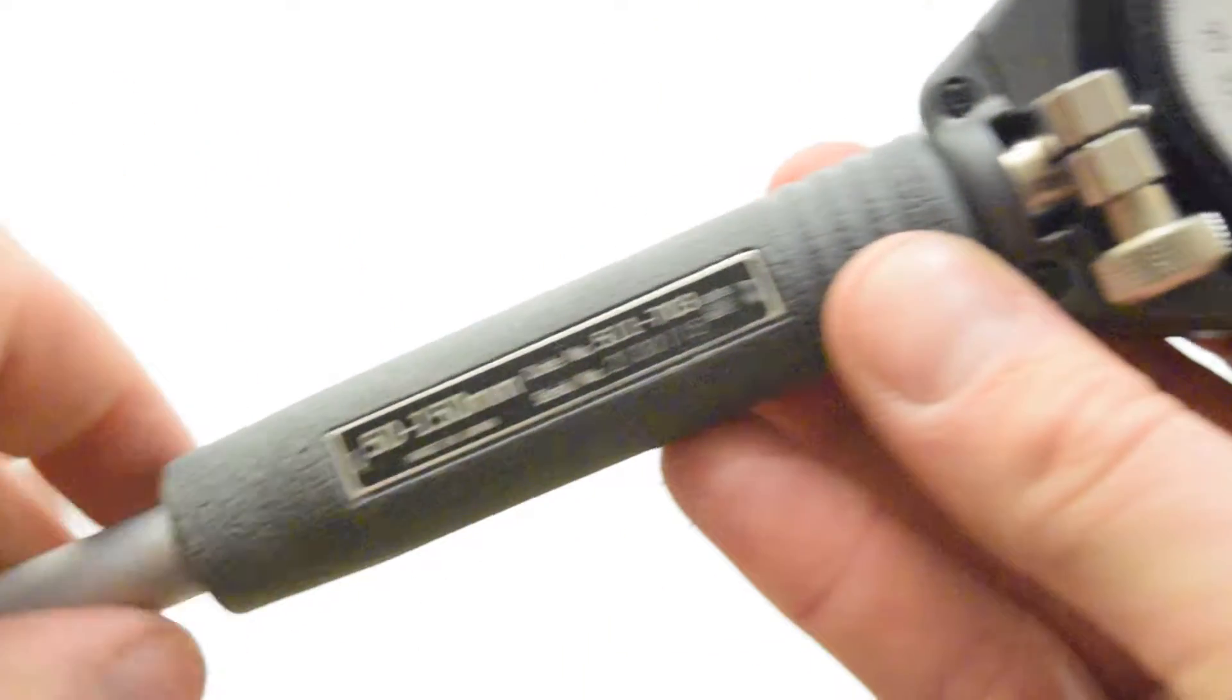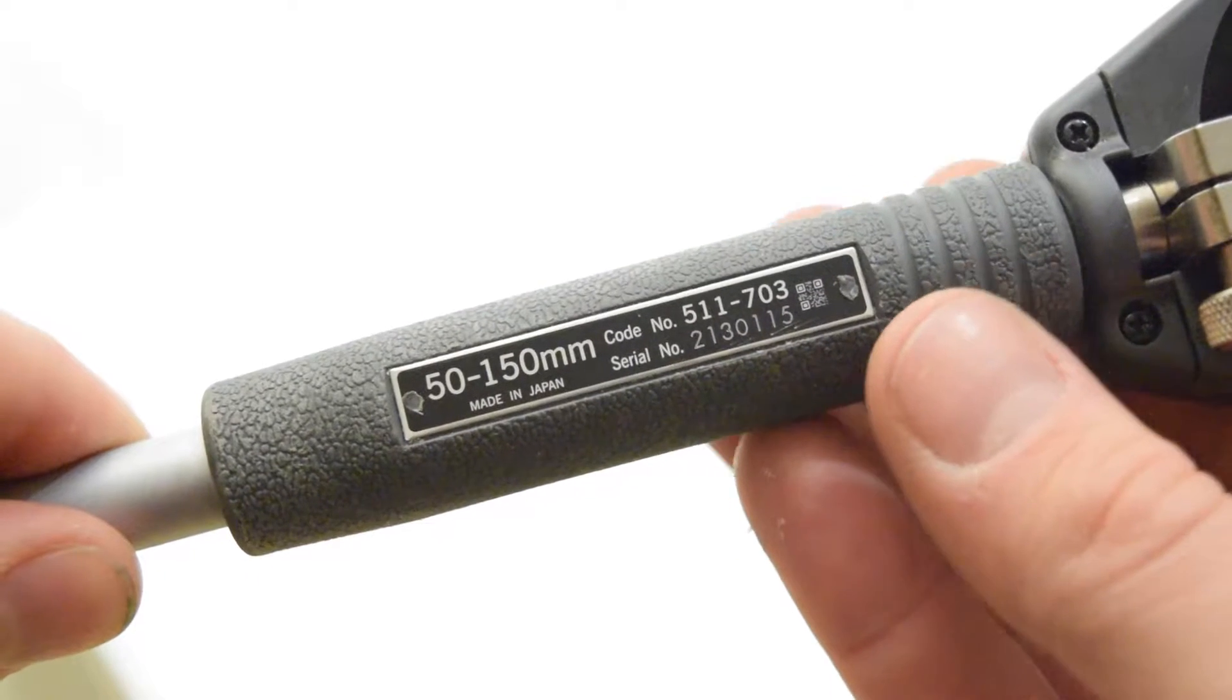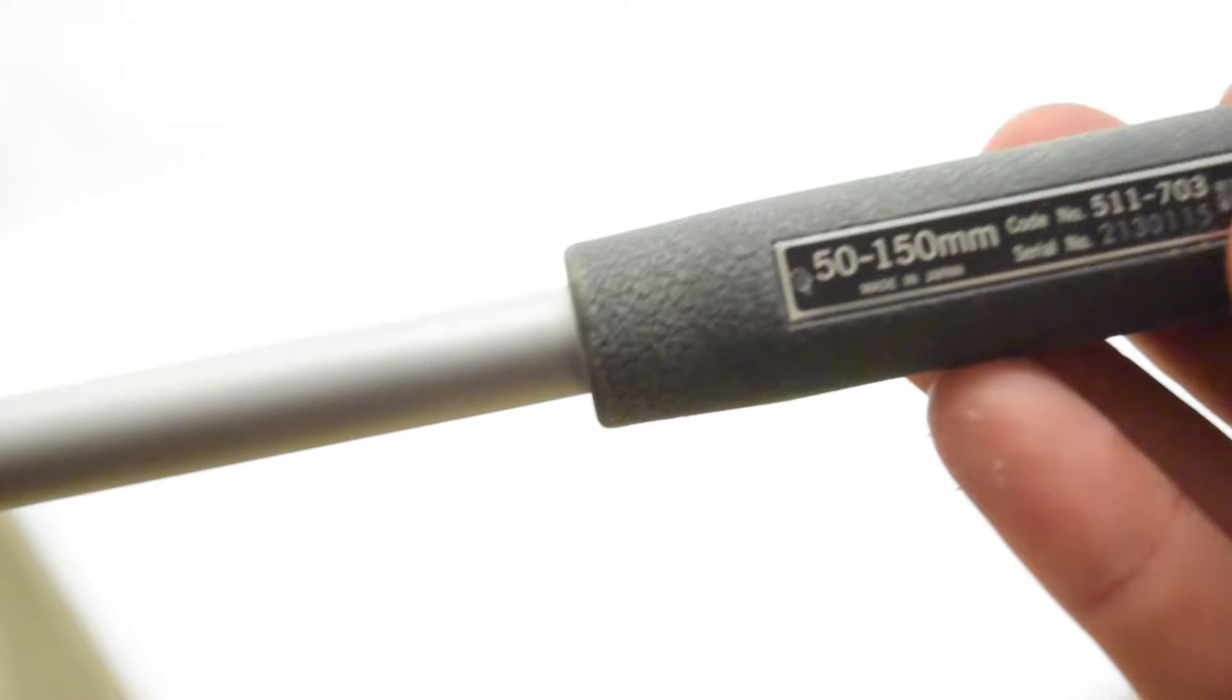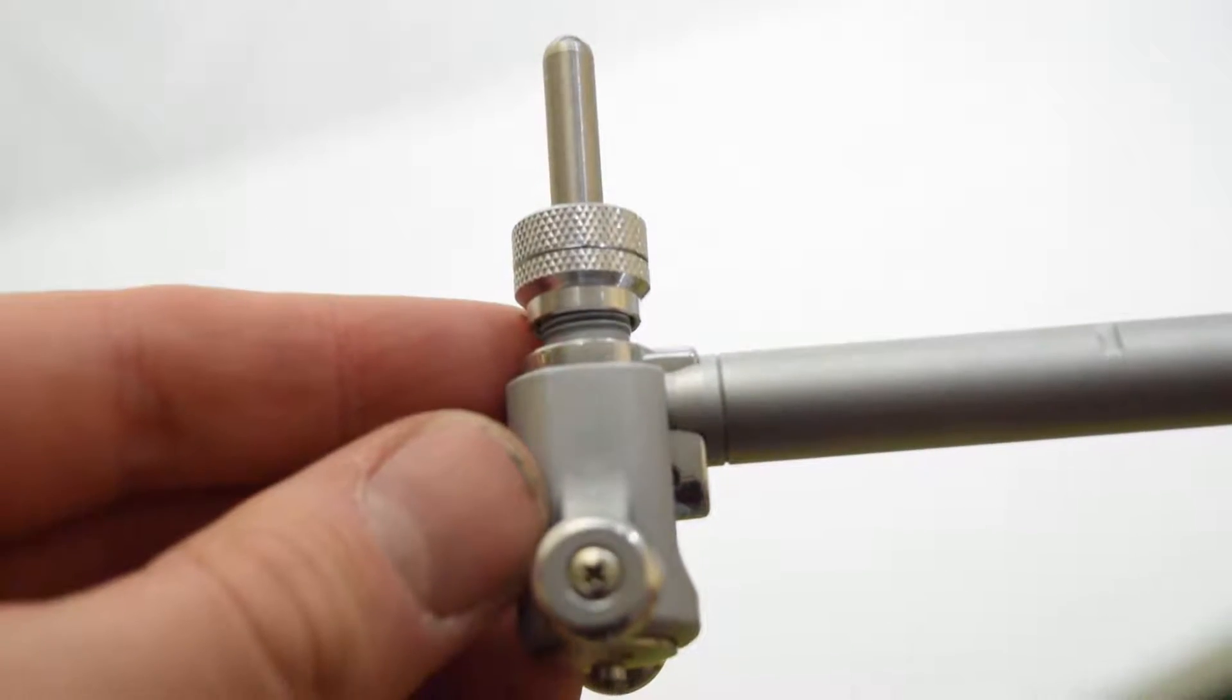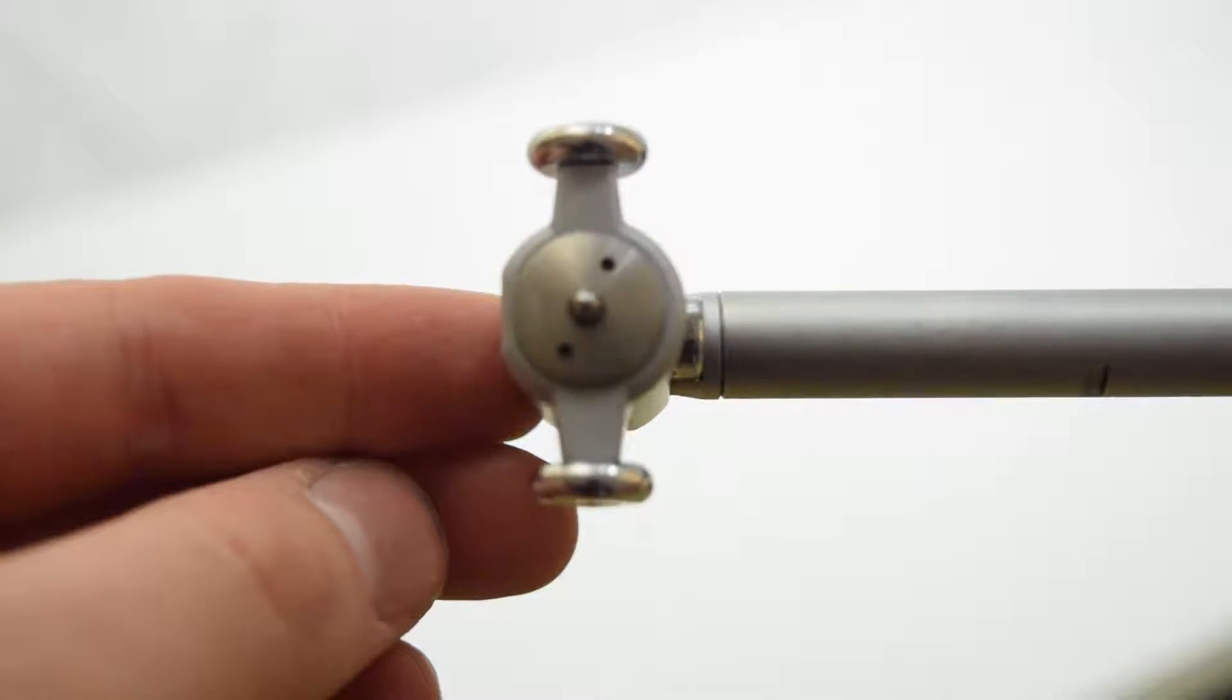And this is a 511 series originally supposed to be 50 to 150 millimeter range, however there are no extension tubes with this, only the one that's currently attached with a 3 millimeter washer inside which gives readings around 70 millimeters.